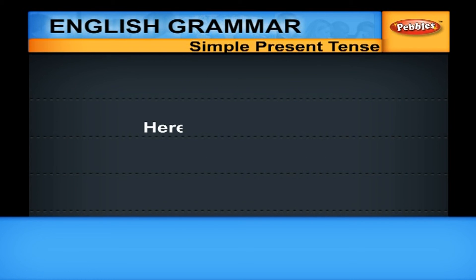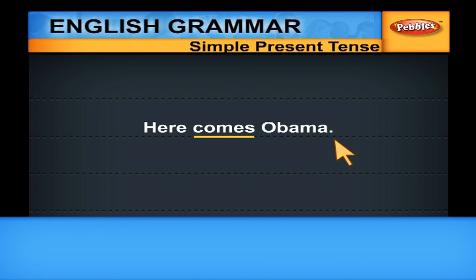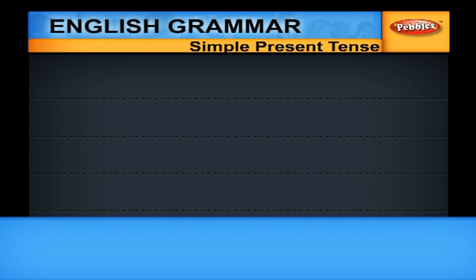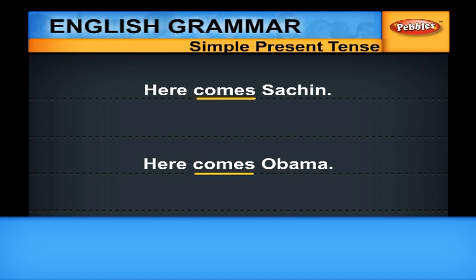In the case of commentaries, we can use simple present. For example: HERE COMES OBAMA or HERE COMES SACHIN — you need not say 'HERE OBAMA IS COMING.' To express that immediacy, you can use simple present. That is an acceptable form to give emphasis to it. We can also use simple present to indicate a future action, which we will discuss later.